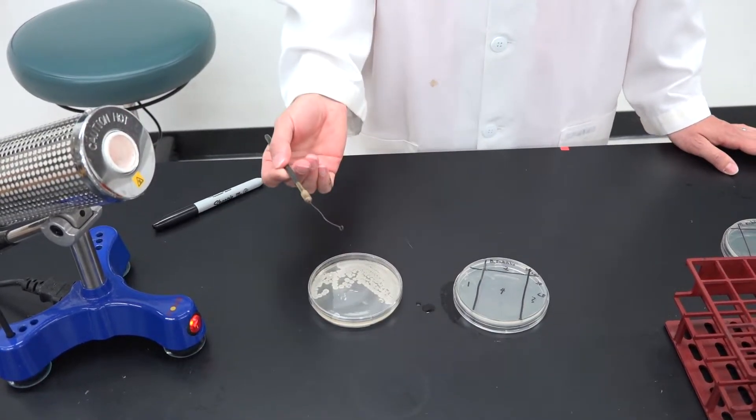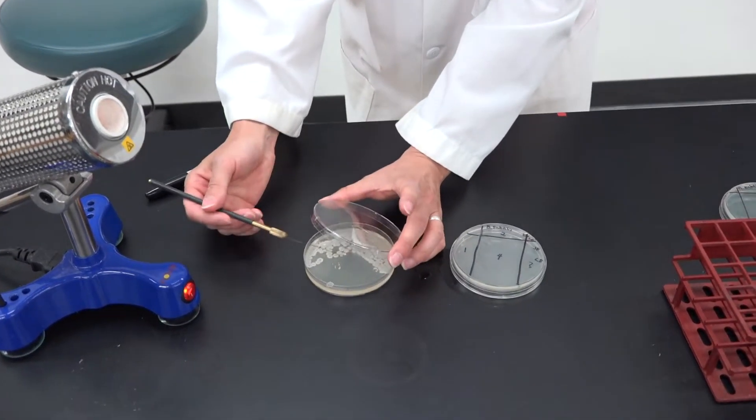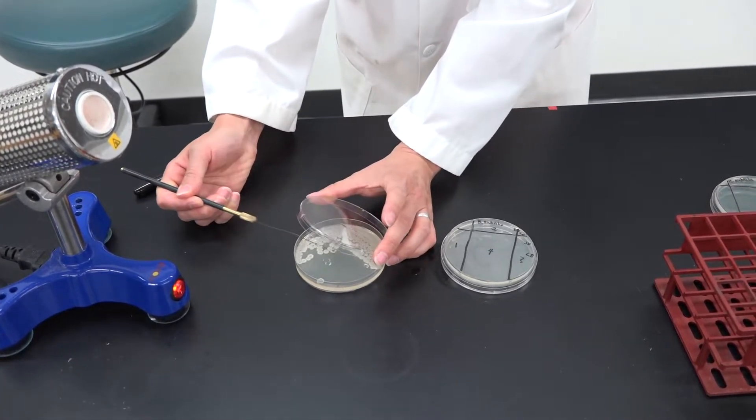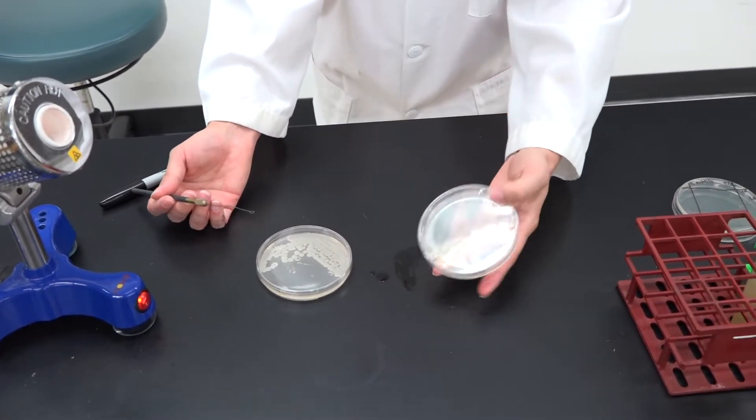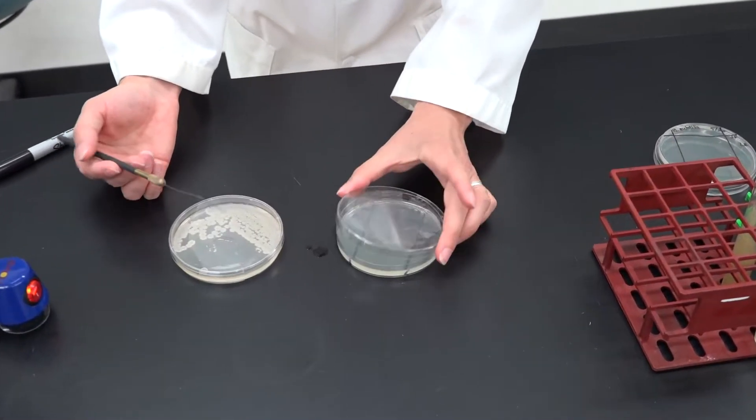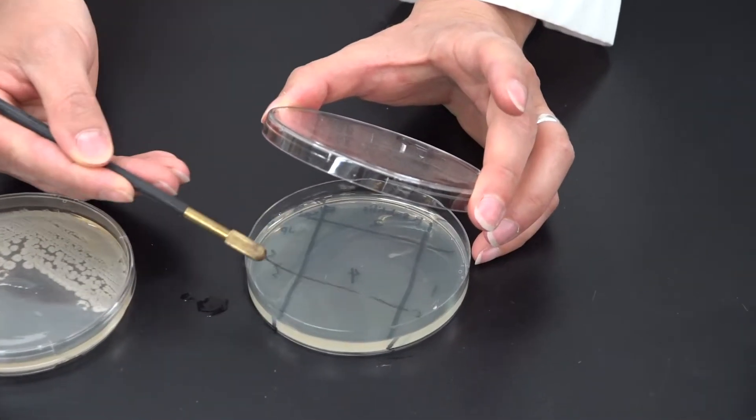You're going to start with a sterilized loop and pick a single colony from your plate. Open up the new plate and streak that colony into quadrant one.